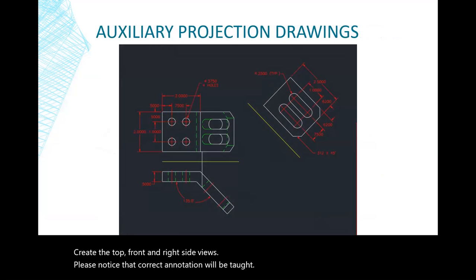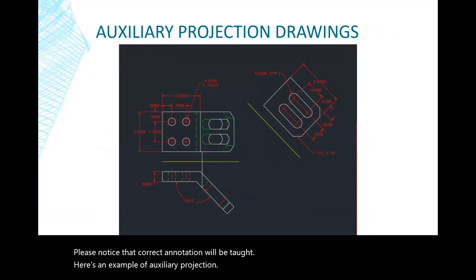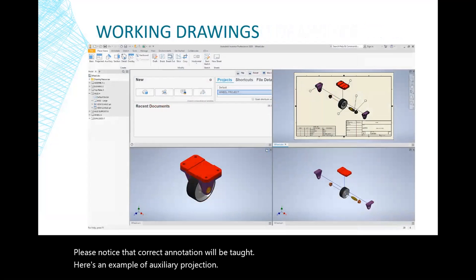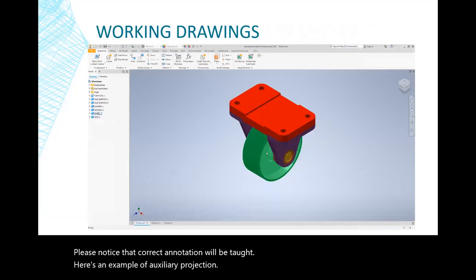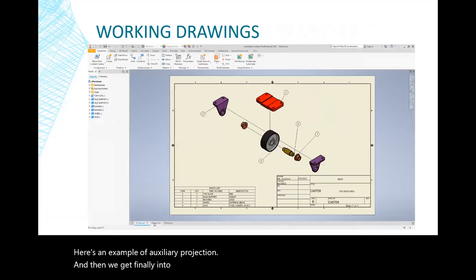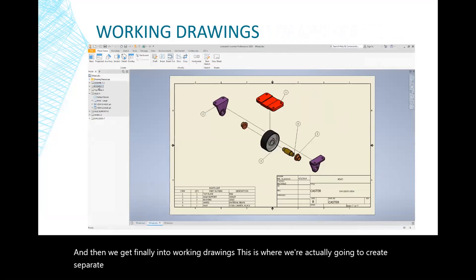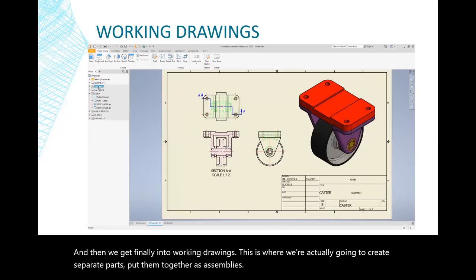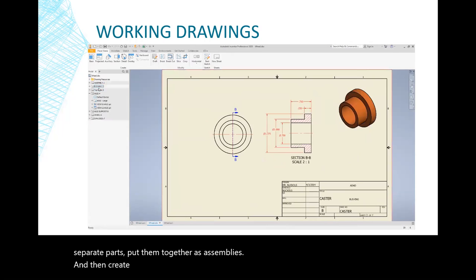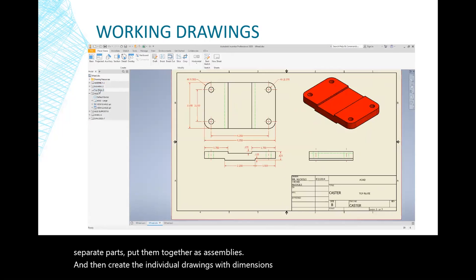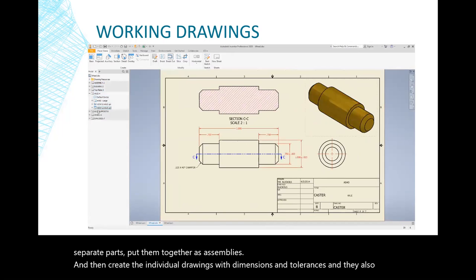Here's an example of auxiliary projection. And then we get into working drawings. This is where we're actually going to create separate parts, put them together as assemblies, and then create the individual drawings with dimensions and tolerances, and also the drawing of the assembly itself.